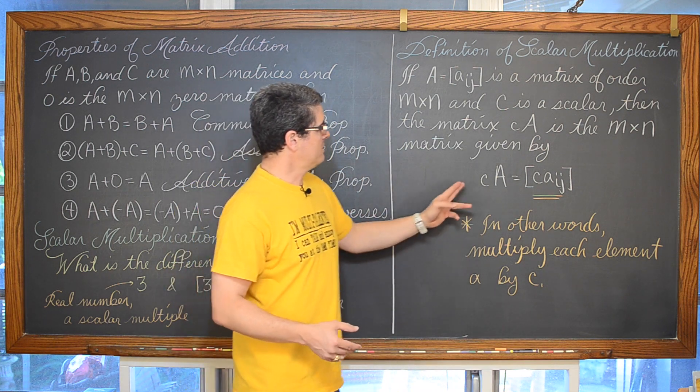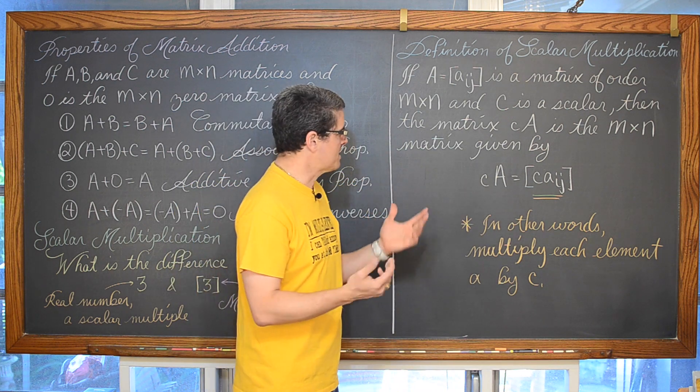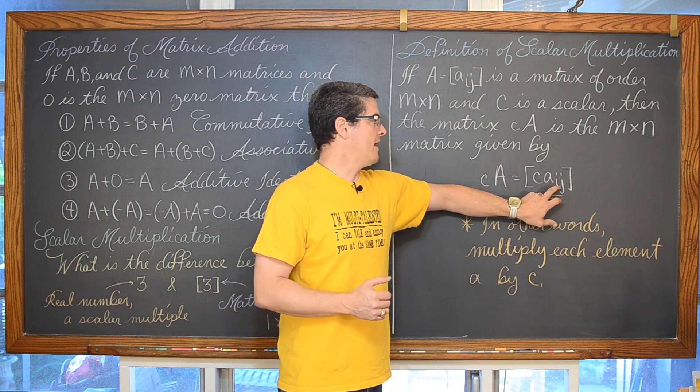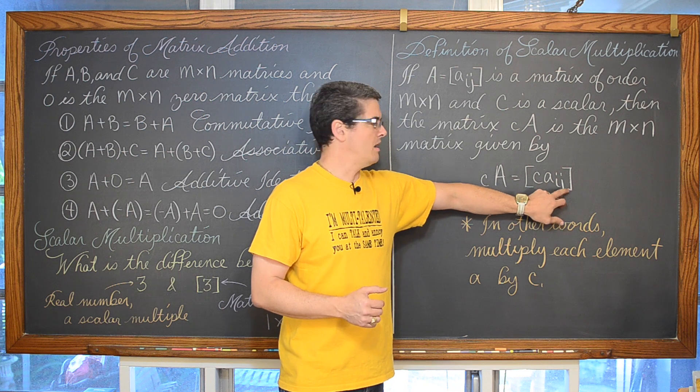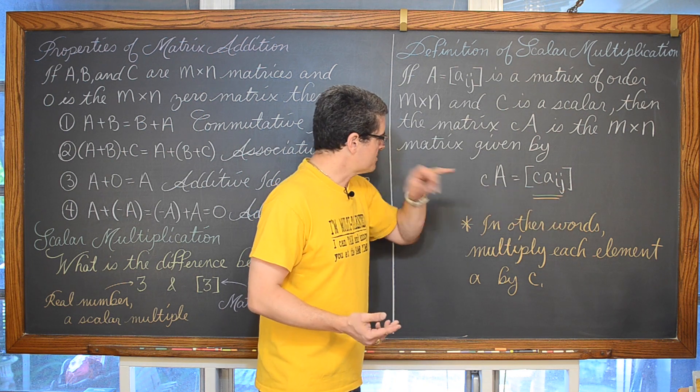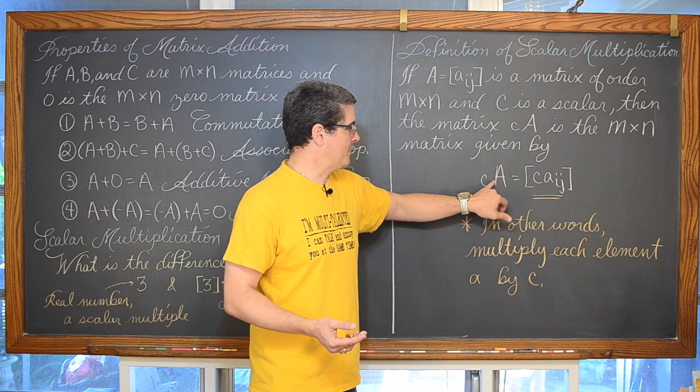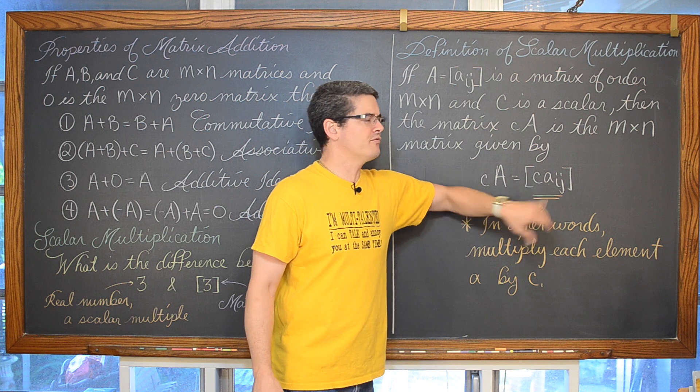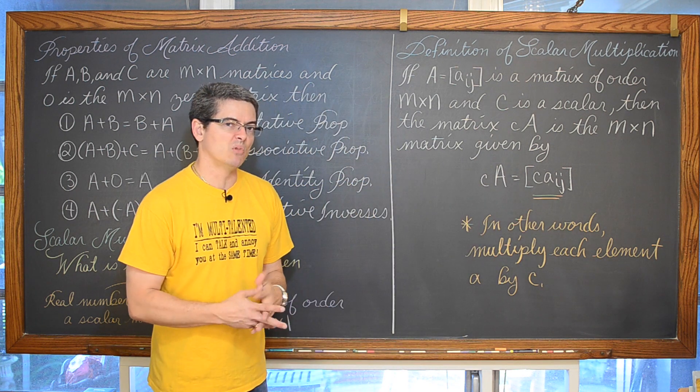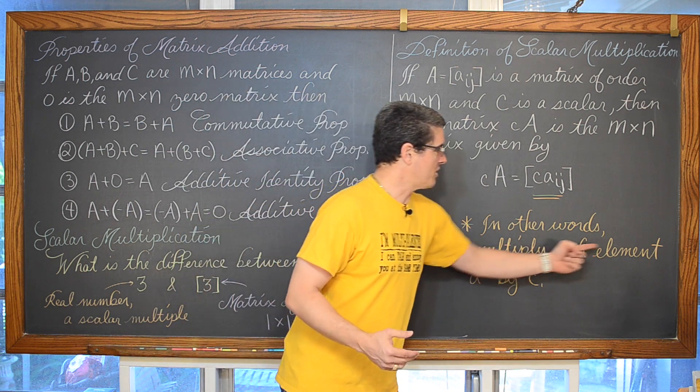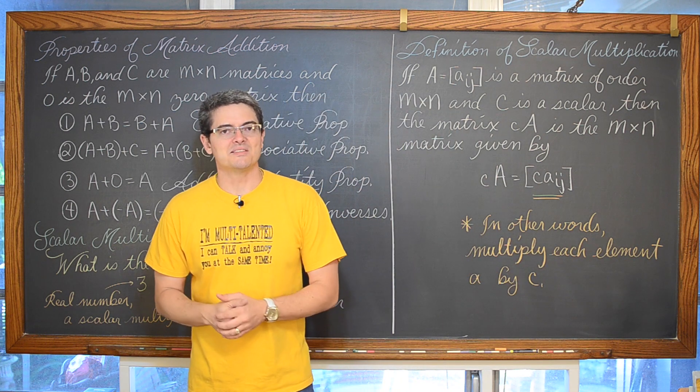That is given by C times A, is given by C times lowercase a of i sub j. C is a real number. It is a scalar multiple. It is getting multiplied to matrix A and now we have CA. When you have two variables touching in algebra that means multiplication.